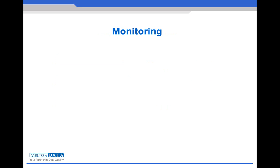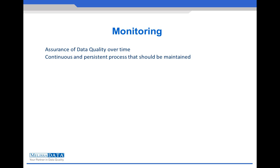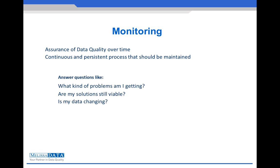After deduplication, the next step to complete the spectrum of data quality is to monitor our data. Monitoring is for the assurance of data quality solutions over time. Data quality is not just a one-time thing — it should be a continuous process maintained for as long as we are receiving new data. Questions like: What kind of problems am I getting? Are new ones coming up? Do my current solutions still address all my data problems? Is my data getting better or worse? — all continue to apply, which is why proper maintenance and monitoring of data is crucial for the success of managing your data warehouse.